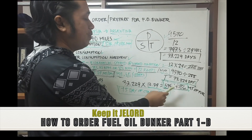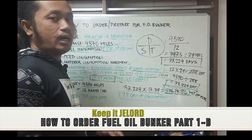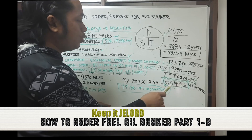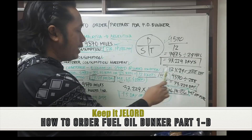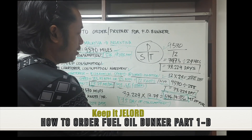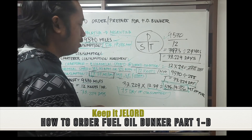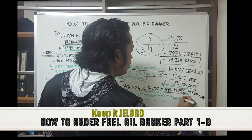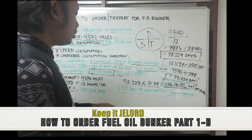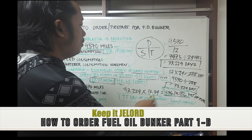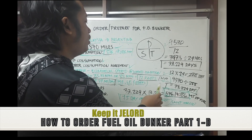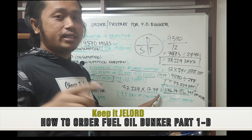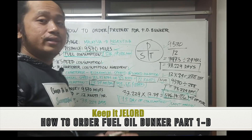We need a total of 576 metric tons. Our company will supply the fuel in Malaysia. When ordering a bunker, make sure you add a plus-five-days safety margin. This safety margin is calculated as 5 days × 17.34 metric tons per day. We will continue this calculation in the next video.